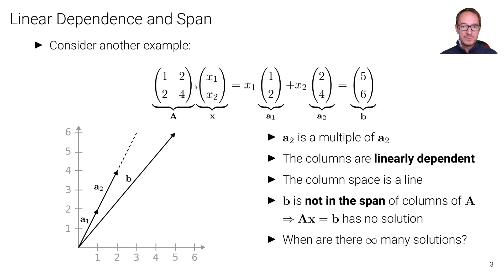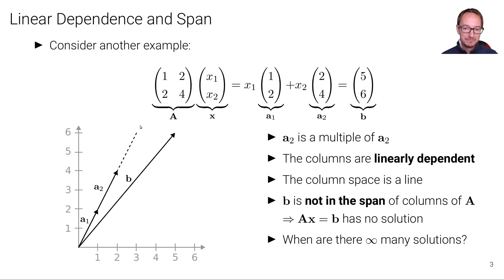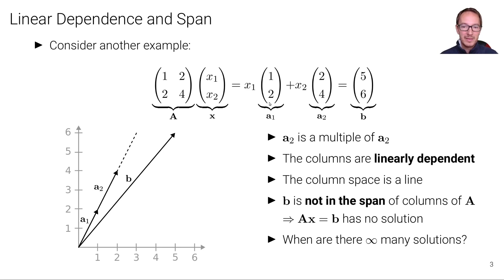In this case, we are trying to solve the system for the vector b = (5, 6). Because a2 is a multiple of a1, the column space has effectively degenerated to a line — this dashed line here. It is not spanning the entire two-dimensional space; it is only a one-dimensional space along that line. This means that b = (5, 6) is not in that column space, so Ax equals b has no solution. There are no scalars x1 and x2 you can find such that multiplying a1 and a2 yields that vector.